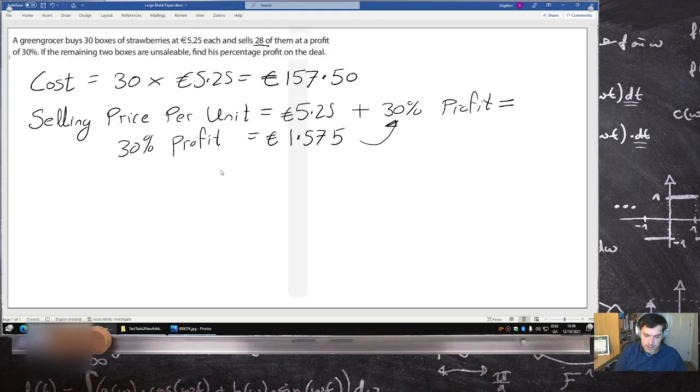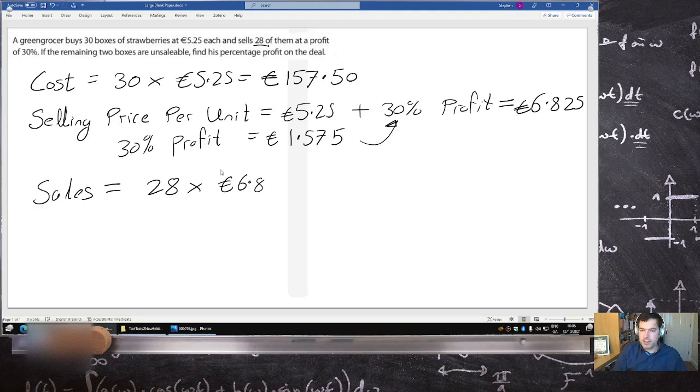That's how much each one is sold for. So the total sales would be 28 times 6.825.